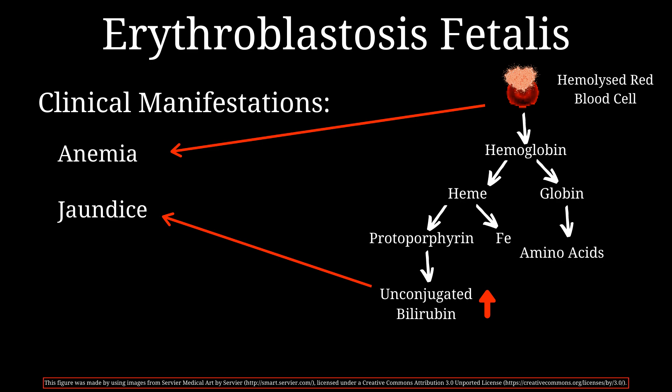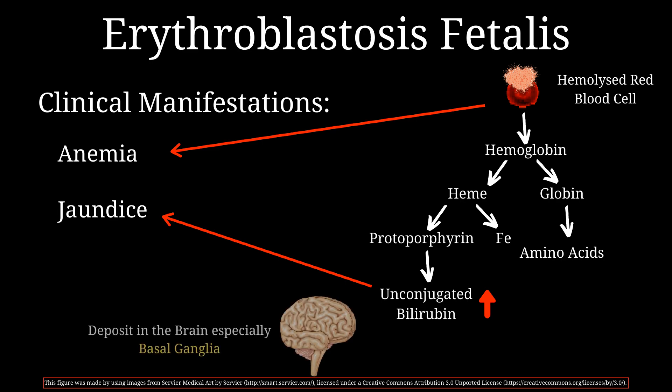Unconjugated bilirubin is also lipid soluble, so it can cross the blood-brain barrier and deposit in the brain, especially in the basal ganglia. This can result in a condition called kernicterus.